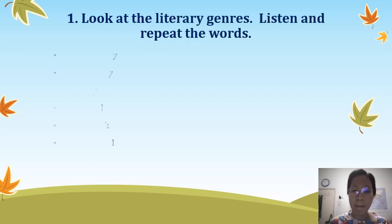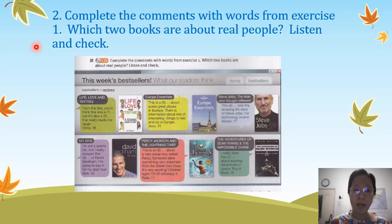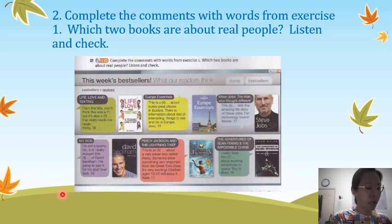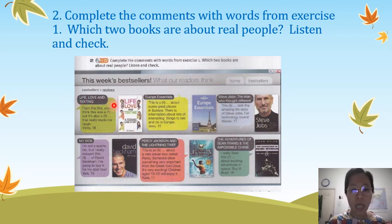Okay, we have covered the literary genres. For the second exercise, complete the comments with words from exercise one. Which two books are about real people? Listen and check. Students, you have already learned about words related to books. Now you need to listen to the recording and fill in the blanks with the correct answer. The title is 'This Week's Best Sellers — What Our Readers Think.' There are 6 books in total that you need to listen to and fill in the blanks.